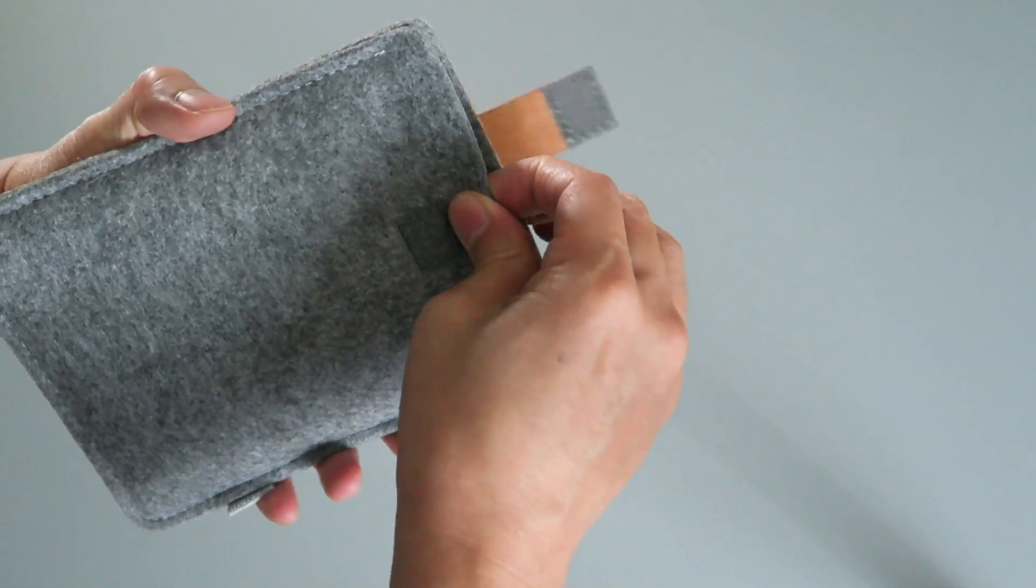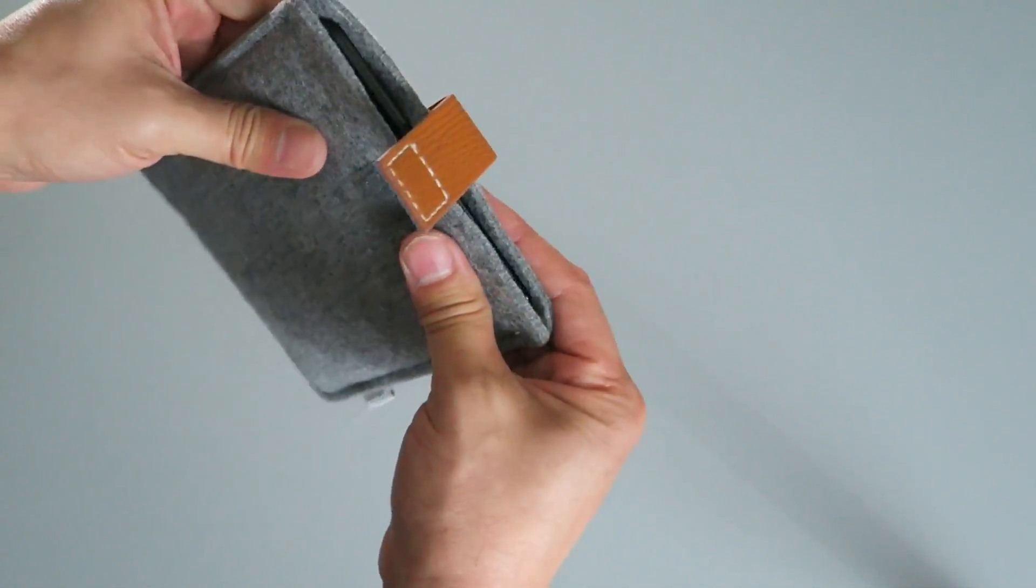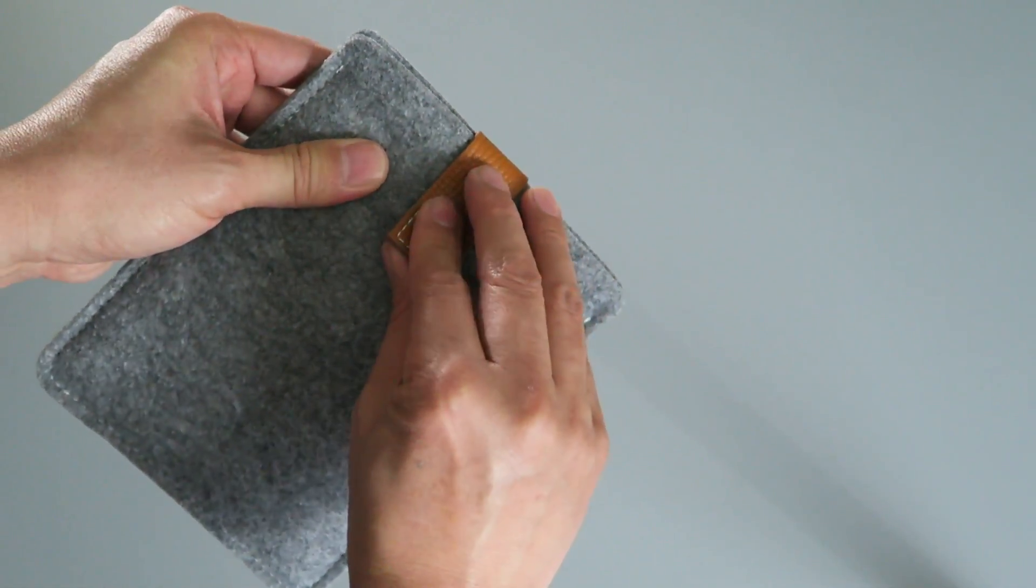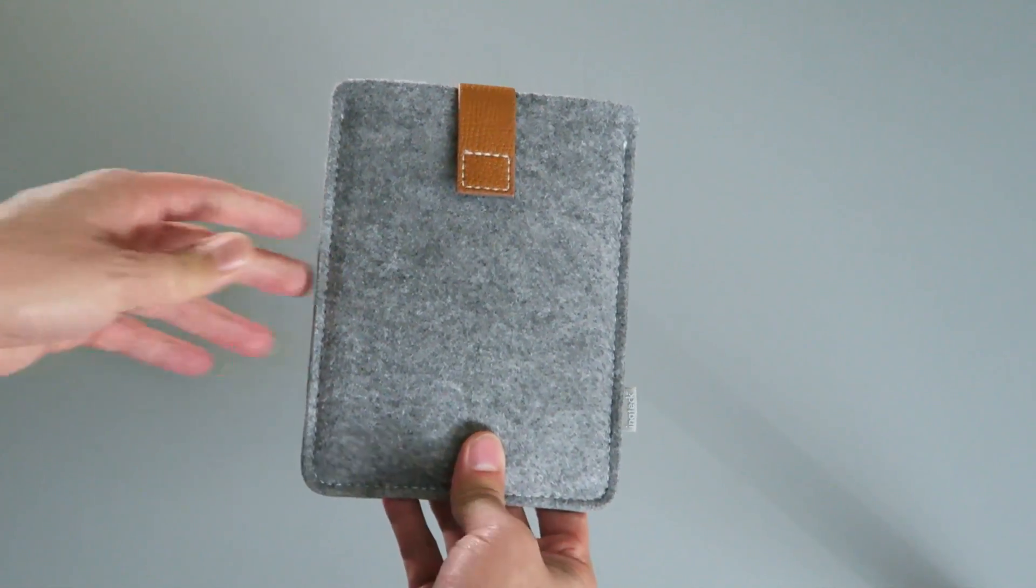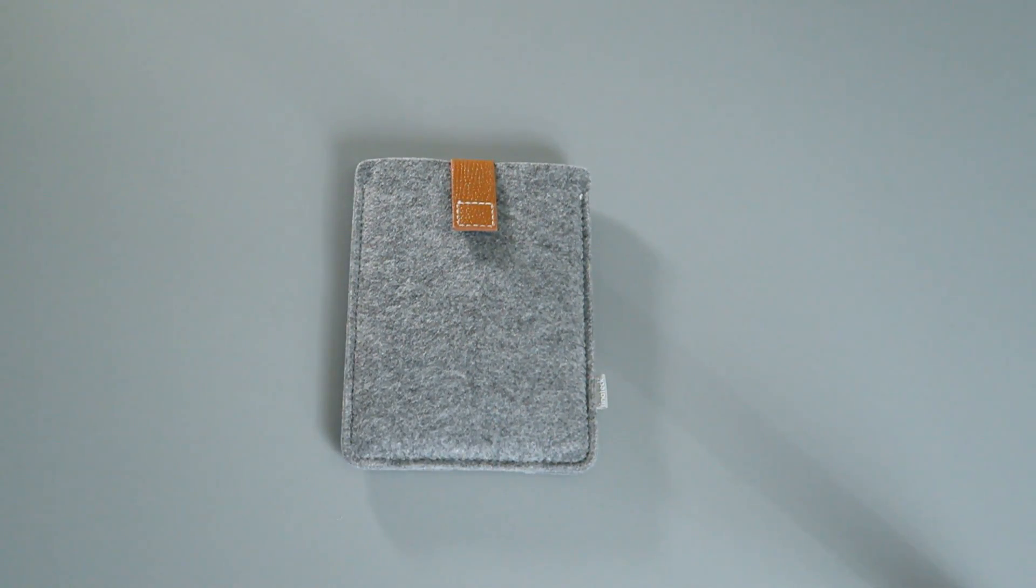One negative is that the front does not have any sort of hard protective material to protect the screen. So that's something that you want to be aware of, although the Kindle Voyage is pretty sturdy. And I don't really think it'll be a problem when you put this in your bag or whatever.